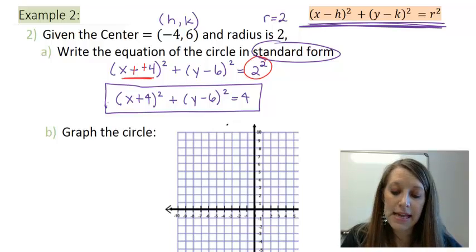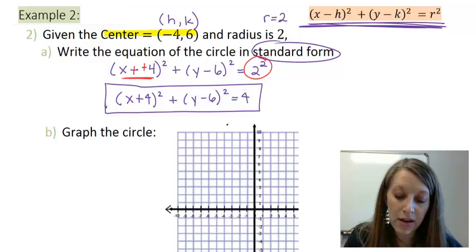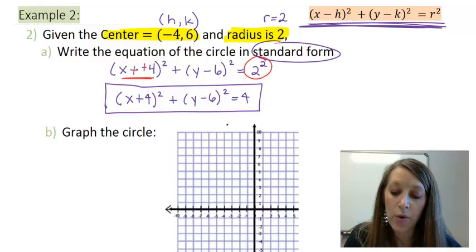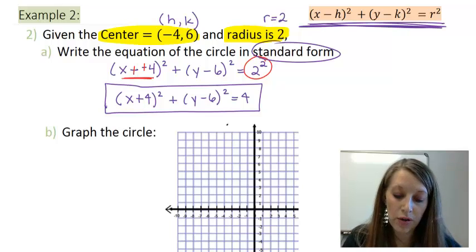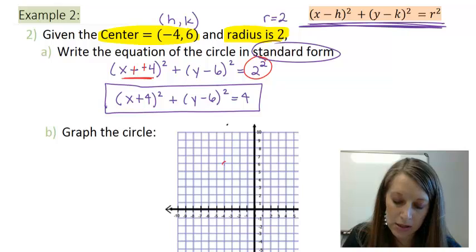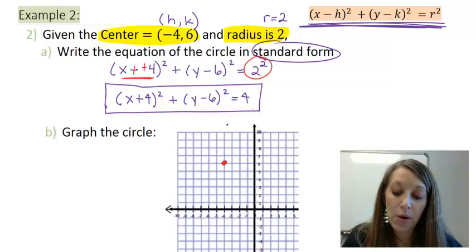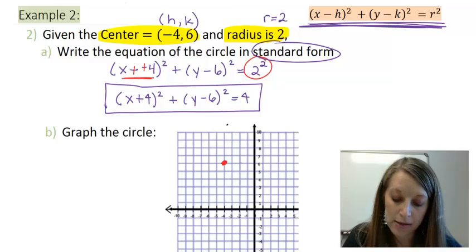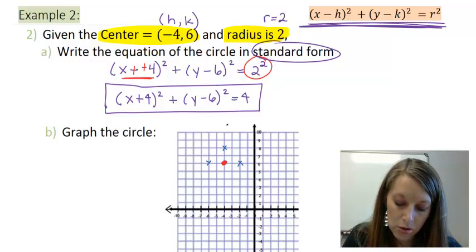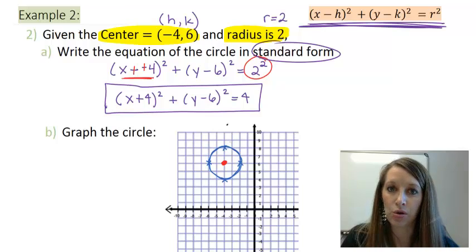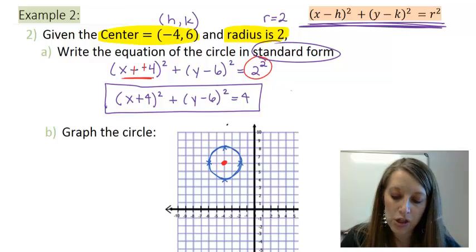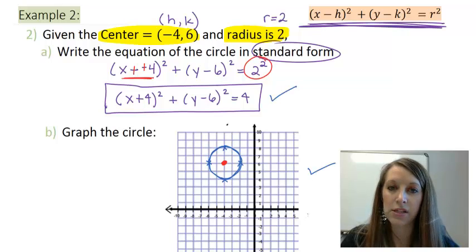To graph this, it's actually easier to graph it with the given information rather than with our equation. So we're just going to use this here and go from there. My center of the circle is (-4, 6). So I count left 4, up 6 units. And since my radius is 2, then I'm just going to count 2 in every direction from my radius. So 2 here, and 2 in every direction. Then I get to connect these dots, and hopefully I come up with something that resembles a circle. So I have come up with my equation in standard form, and I have just graphed this circle here.